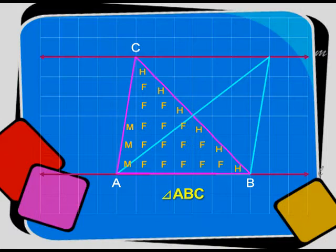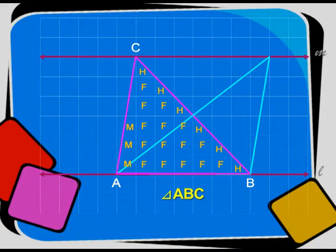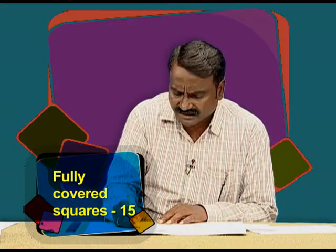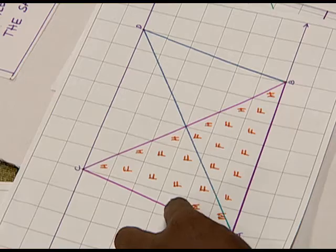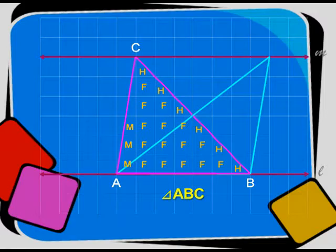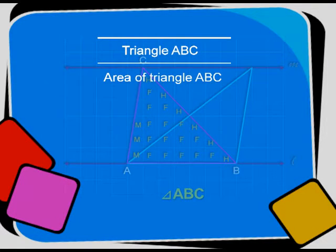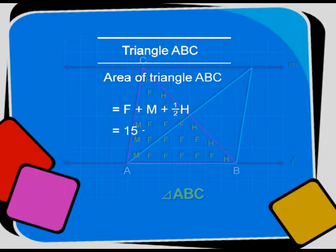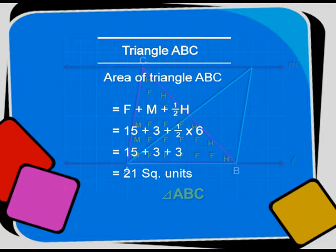In triangle ABC, the fully covered squares are 15, more than half covered are 3, and exactly half covered are 6. The area of triangle ABC equals F plus M plus half of H, which is 15 plus 3 plus half of 6, giving 15 plus 3 plus 3, which equals 21 square units.